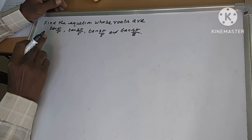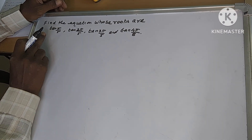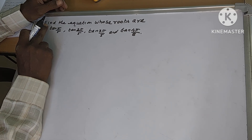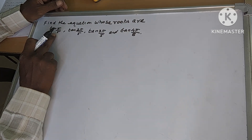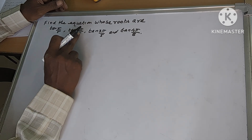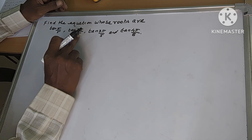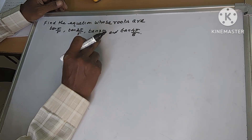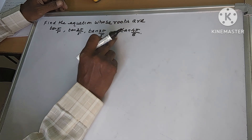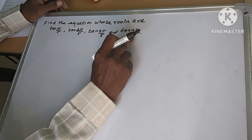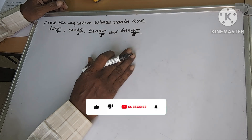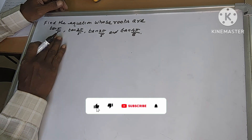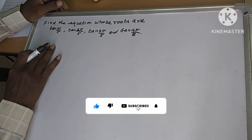Good morning friends. Now we find out the equations — find the equations whose roots are tan(π/5), tan(2π/5), tan(3π/5), and tan(4π/5). These are the roots, and for these roots we have to find the equations.